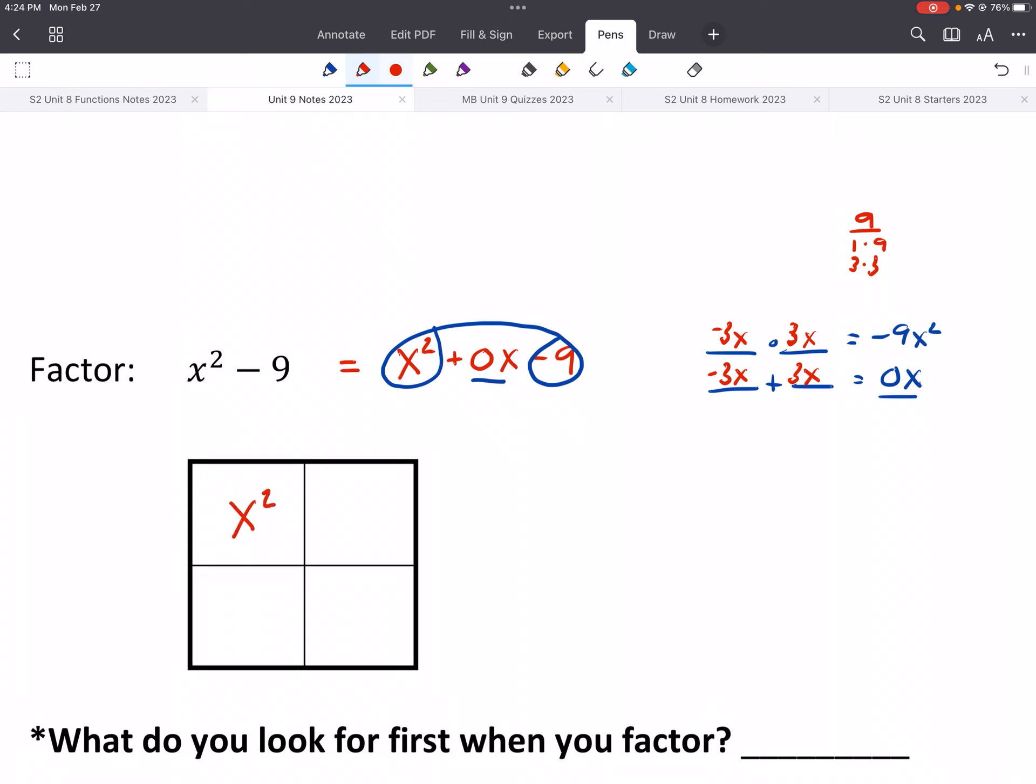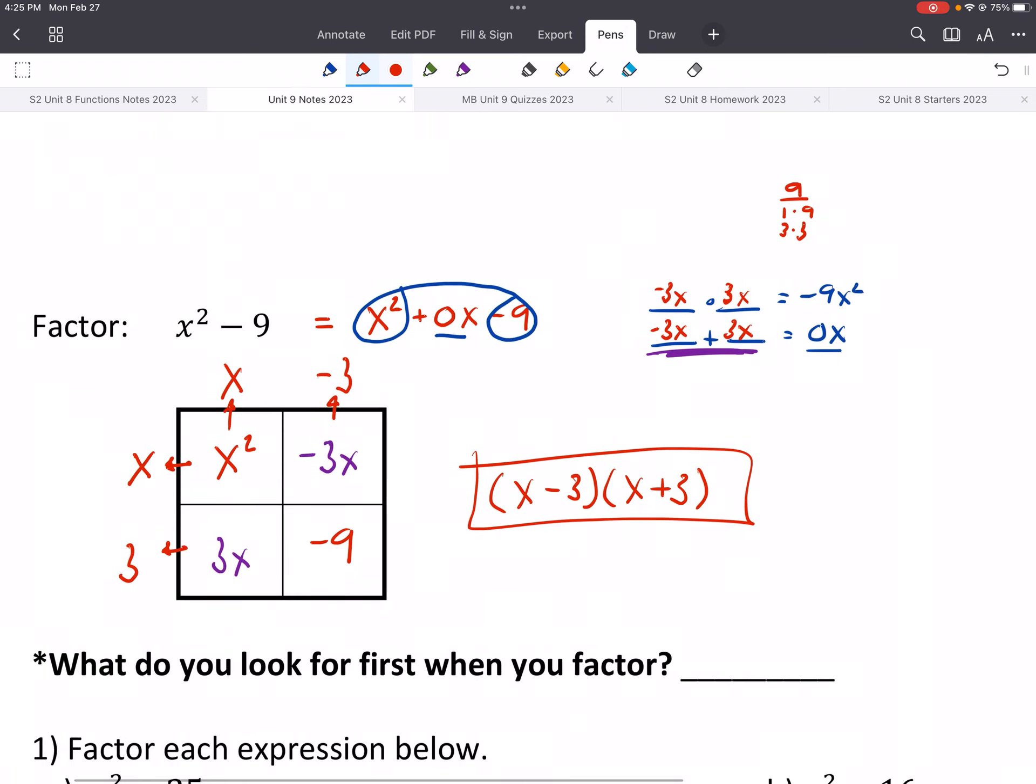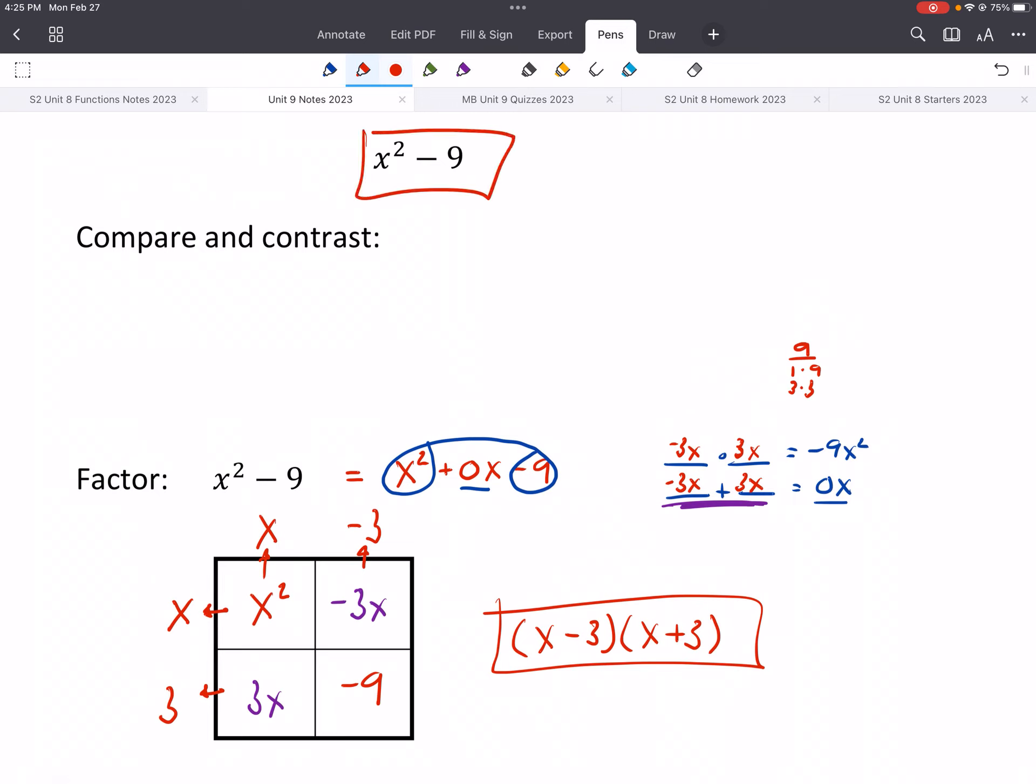So now we can rewrite this trinomial to have 4 terms. Again, the same thing that we did before, x squared. The first and last is your first and last. So your x squared goes to the first box, and the negative 9 goes to the last box. And then the middle term is your other two boxes. So negative 3x and 3x. And now we'll factor out the greatest common factor for each row and column. So we can take out an x. We can factor out a 3. We can factor out an x. And we can factor out a negative 3. And we can write down our factored answer. So that's really kind of the new thing, is if the middle term is missing, if it looks like this, then we can just rewrite it with 0x in the middle term. And then we do the same thing.